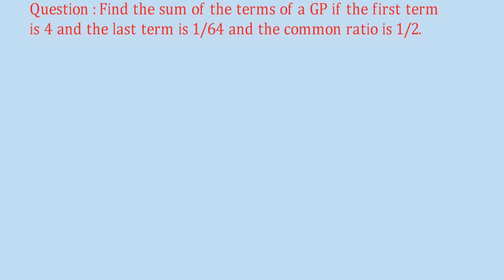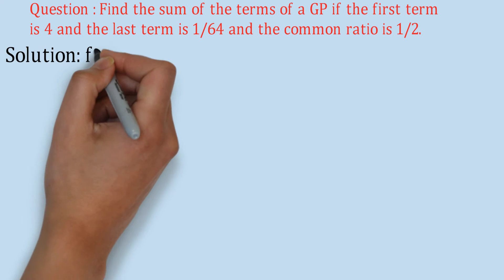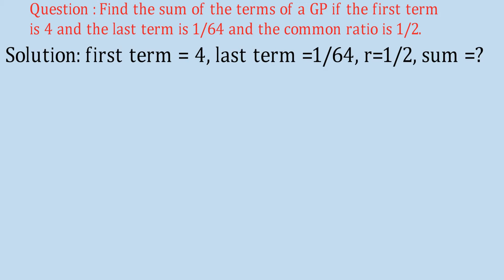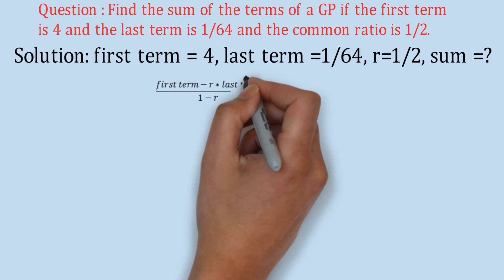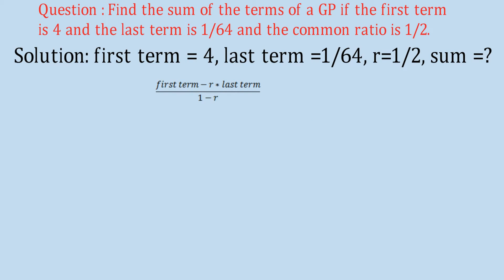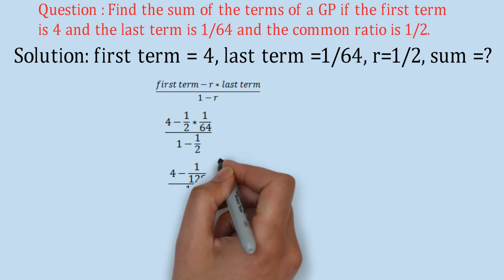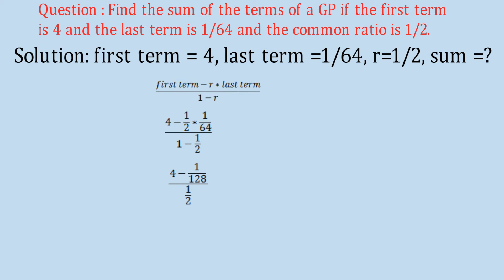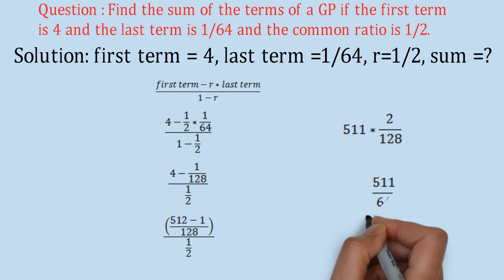Question: Find the sum of terms of a GP where the first term is 4, the last term is 1/64, and the common ratio is 1/2. Since N is not given, we use the tricky formula. With R < 1: Sn = (first term − R × last term) / (1 − R) = (4 − (1/2)(1/64)) / (1/2) = (4 − 1/128) / (1/2). Solving the fraction gives 511 × 2 / 128, so the answer is 511/64.